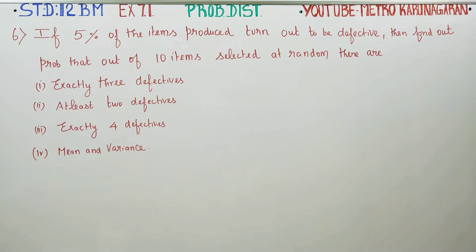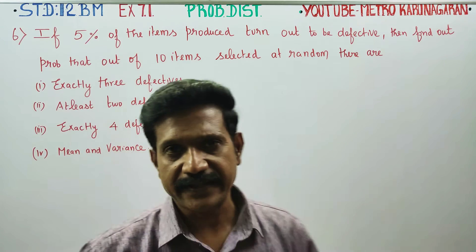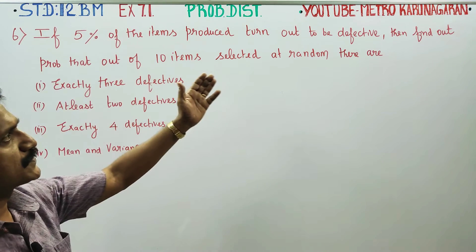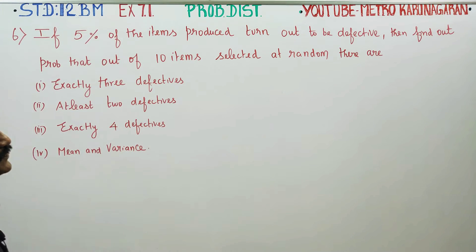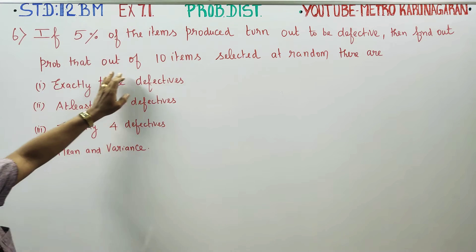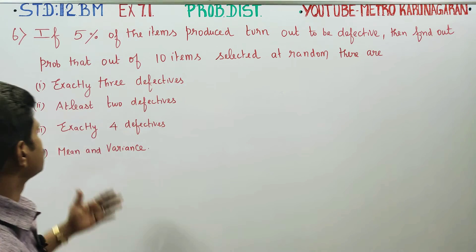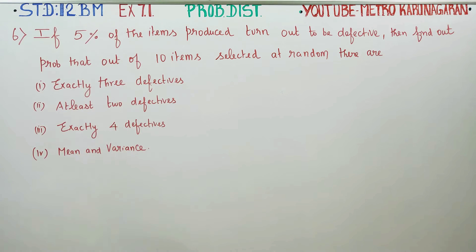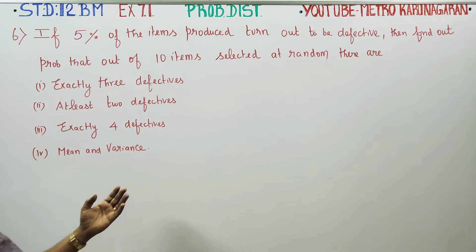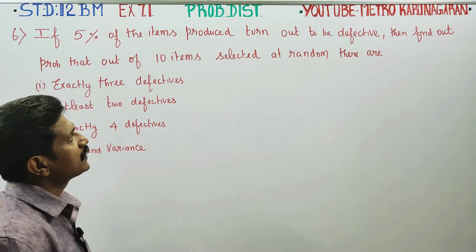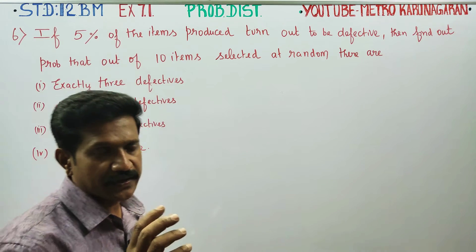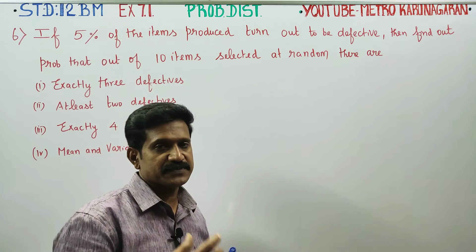Dear 12th standard business math students, in Exercise 7.1 Problem Number 6: if 5% of the items produced turn out to be defective, find the probability that in 10 items selected at random there are exactly three defectives, at least two defectives, exactly four defectives, and find the mean and variance.